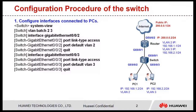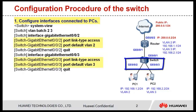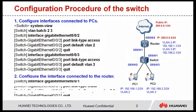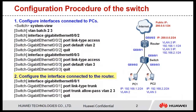Let's move to the configuration procedure. First, let's see the configuration procedure of the switch. There are two steps. Step 1: Configure interfaces connected to PCs as access interfaces and add them to VLAN 2 and VLAN 3 respectively. Step 2: Configure the interface connected to the router as a trunk interface and add it to VLAN 2 and VLAN 3.